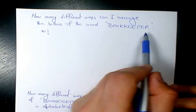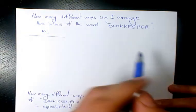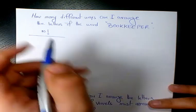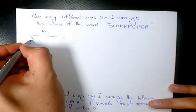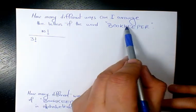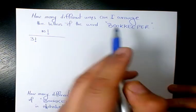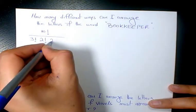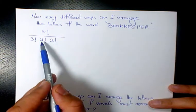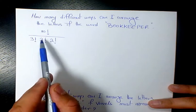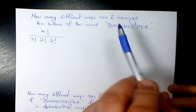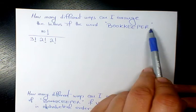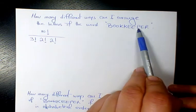But here we have some letters that are repeating, so I need to take them out. E is repeating three times, O is repeating twice, and K is also repeating twice. So only three of them are not repeating, which is B, R, and P.